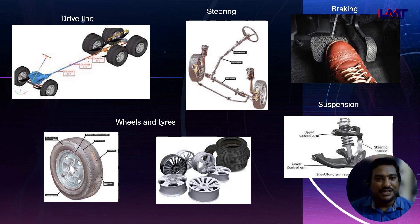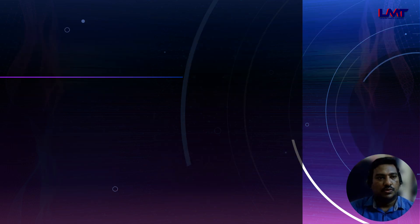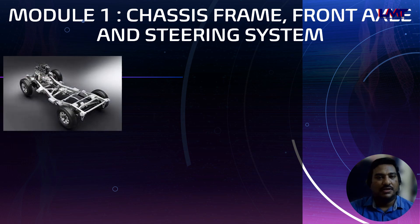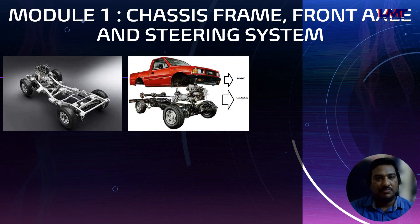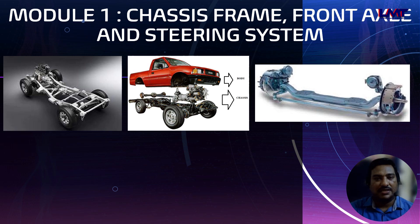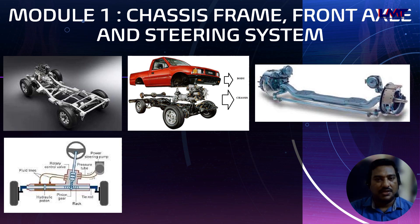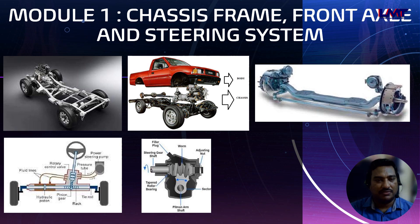Module one covers chassis and frame, front axle, and steering system. In this module we are going to explore chassis and different types of vehicle frames, different types of vehicle bodies, construction methods, and components of chassis and frame. We will also explore front axle components, types of stub axles, and then steering system components and different types of steering gearboxes.